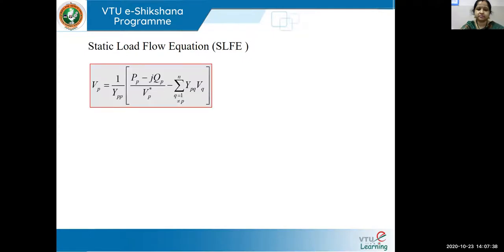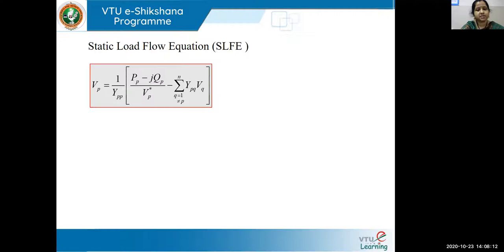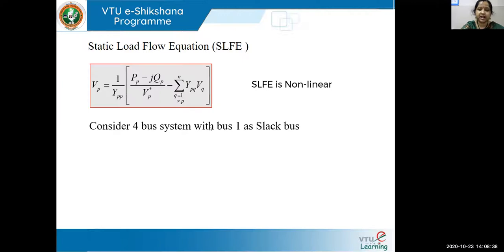We have already seen the static load flow equation. In that, VP equals one over YPP times (PP minus jQP) over VP* conjugate minus sigma (Q=1 to N, Q≠P) YPQ VQ. In Gauss elimination, to find the voltage at a particular bus, we take the initial value of every last iteration. For a PQ bus, the known values are real power and reactive power, and we need to find the magnitude of voltage and angle delta.